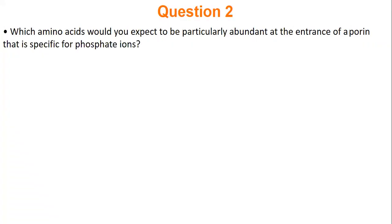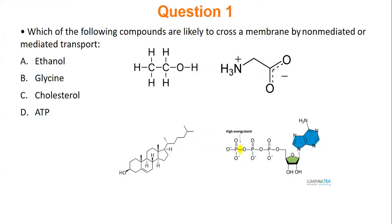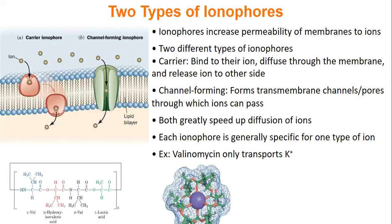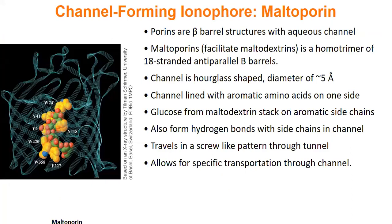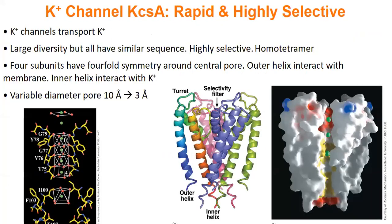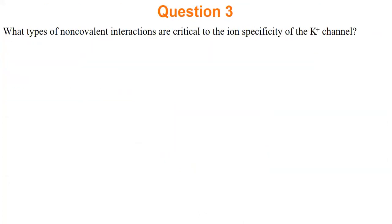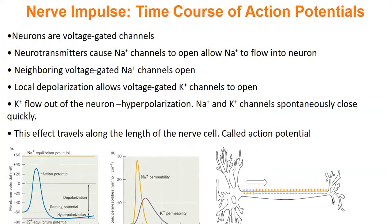Just a quick review of what we covered on Wednesday. We started to look at transportation through the membrane using different systems. We looked at ionopores, how to get ions through the membrane, and then different types of channels — porins, a multiporin, and potassium channels, how to transport potassium through the membrane. Then we looked at how nerve impulses work in terms of sodium and potassium channels.